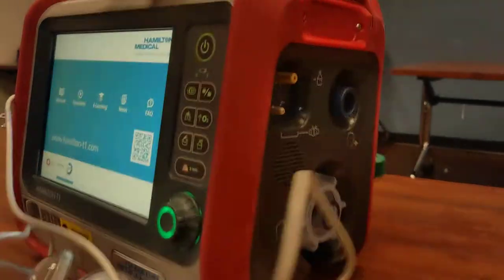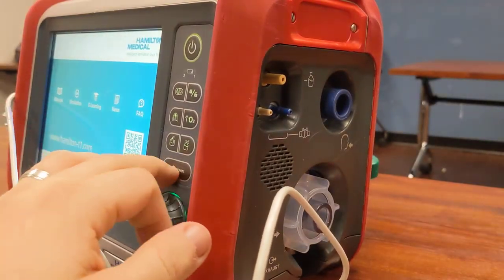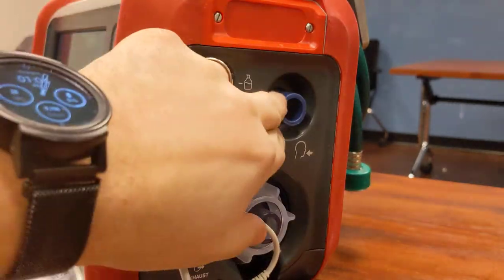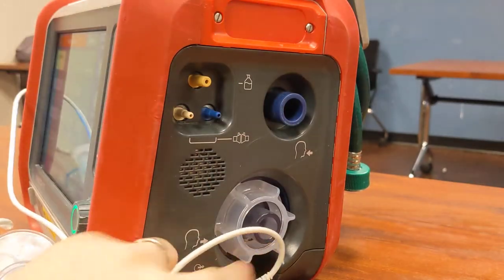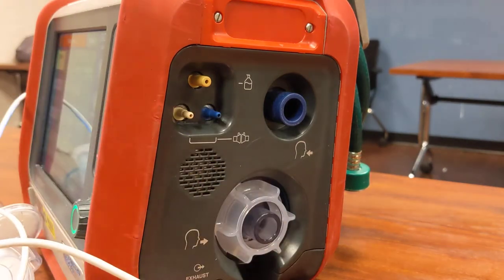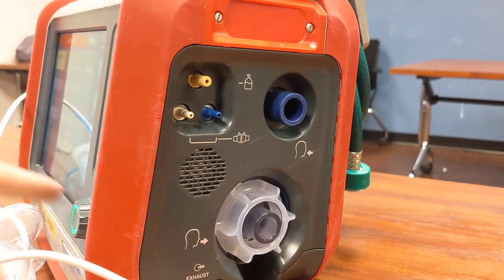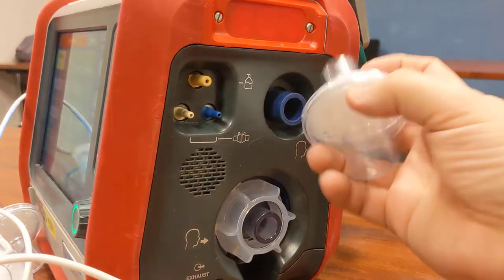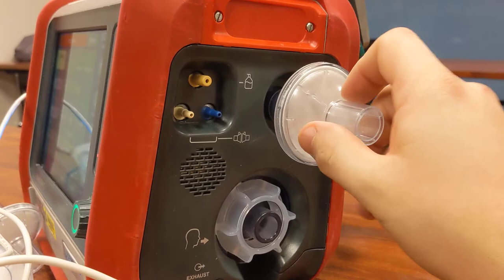So the way that we're going to hook these into our vent circuit here, here we have the inspiratory side of our circuit setup and the expiratory side. We've already got an expiratory valve on here. So the first thing we're going to do is we're going to put a filter on our inspiratory limb.